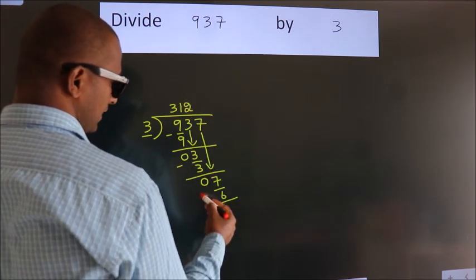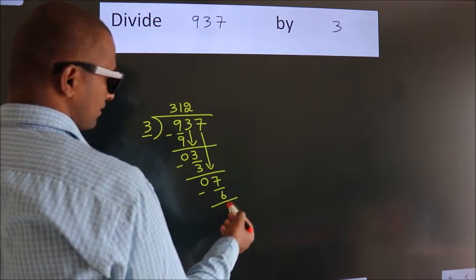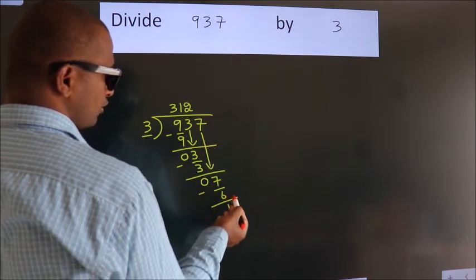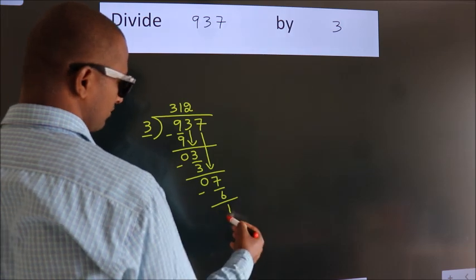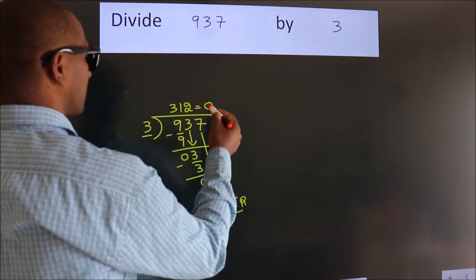Now we subtract. We get 1. After this, no more numbers to bring it down. So we stop here. This is our remainder. This is our quotient.